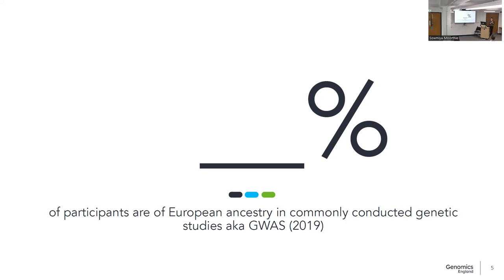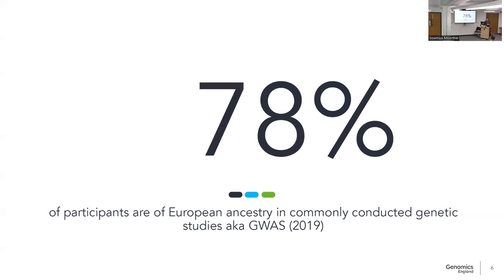Do you know what percentage of participants in GWAS studies are of European ancestry? Audience guesses ranged from 90% down to 85% and 70%. The answer is approximately 78% — I'll put a tilde because this data is a few years old depending how you look at it — but roughly 80%.